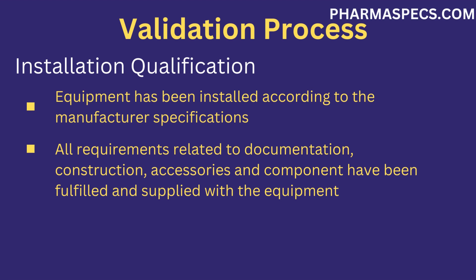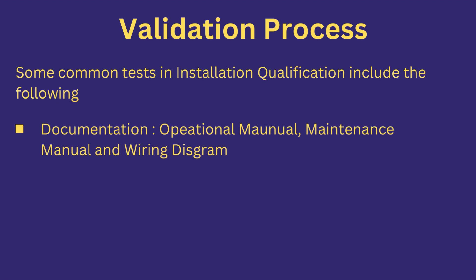The next stage after design qualification is installation qualification. In this stage, equipment installation is verified and checked to see whether the installation is carried out according to the equipment and manufacturer requirements. It is also checked that the supplied equipment contains all the required elements such as documentation, material of construction, accessories, and components. Some common tests in installation qualification include documentation — it is checked and verified that the manufacturer has supplied all documentation agreed upon during the design qualification stage, such as operational manual, maintenance manual, wiring diagram, and preventive maintenance schedule.